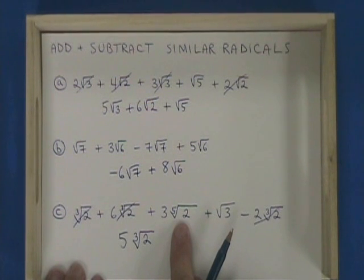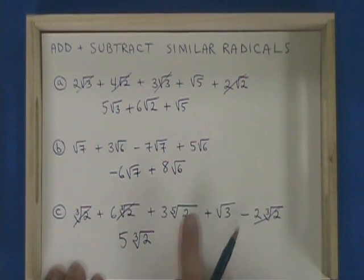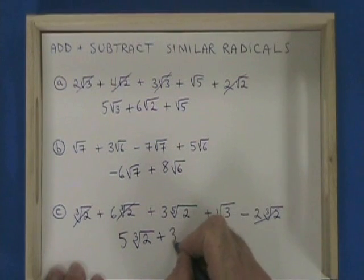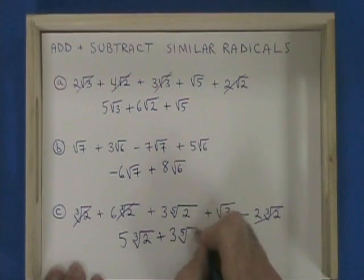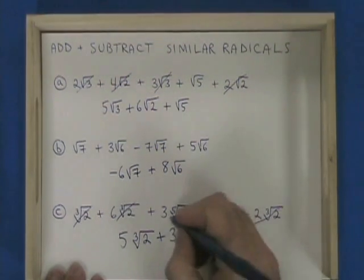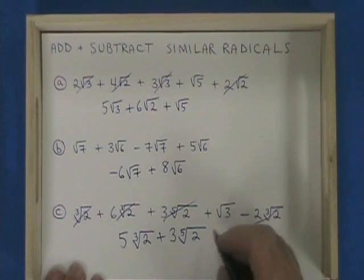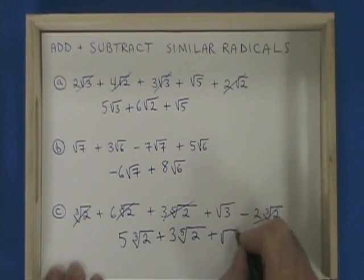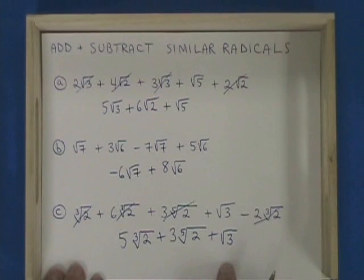There is only one term with the fifth root of 2, so it's carried down to the answer. There's also only one term with √3, so it's also carried down. This is the final answer.